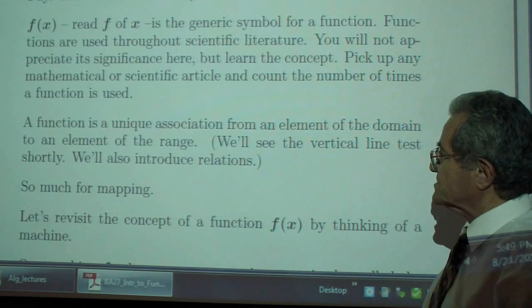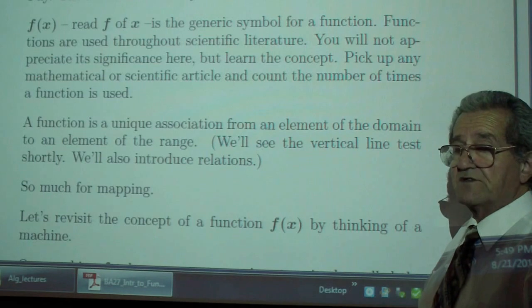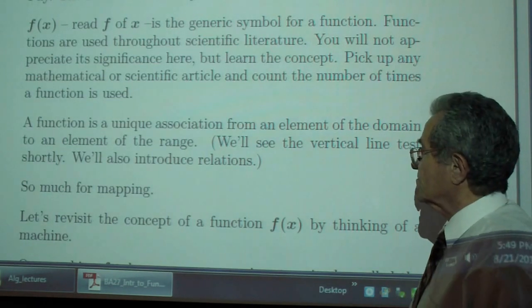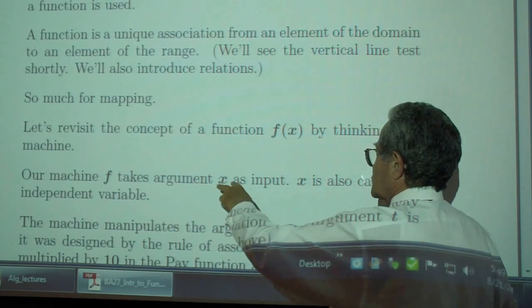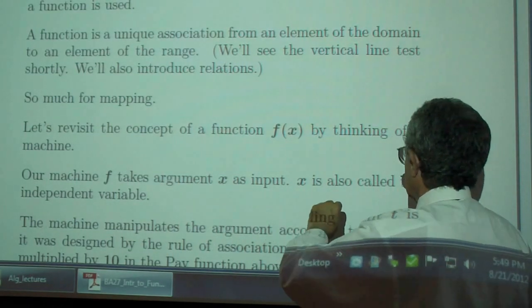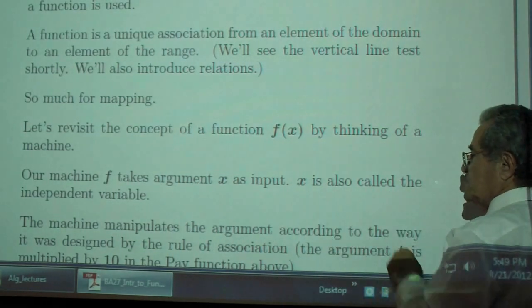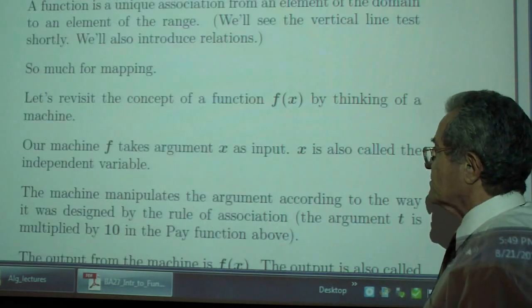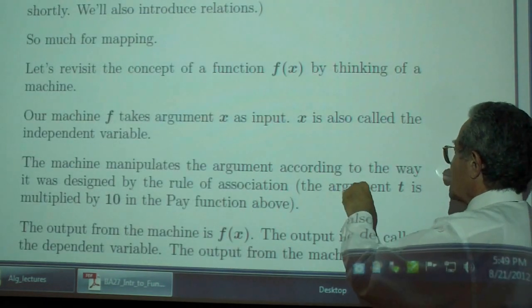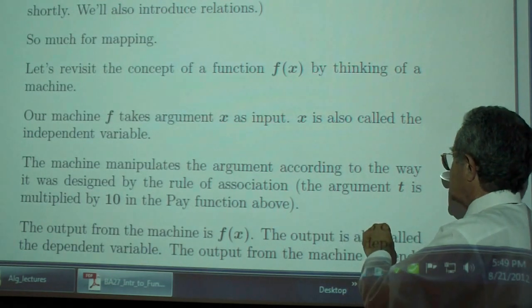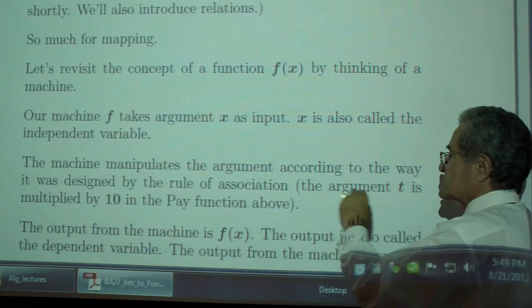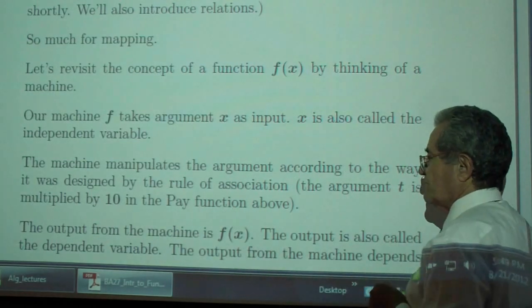You like mappings? Be my guest. I prefer the concept of a machine. Our machine F takes argument X as input. X is also called the independent variable. The machine manipulates the argument according to the way it was designed by the rule of association. The argument T is multiplied by 10 in the pay function above.